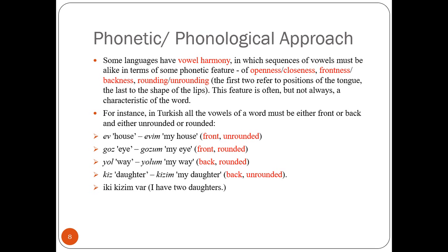In Turkish, all the vowels of a word must be either front or back, or rounded or unrounded, or open or close. For example, 'ev' means 'house' in English — both vowels are front and both are unrounded. So we have vowel harmony in that word, both in terms of part of the tongue and rounding.